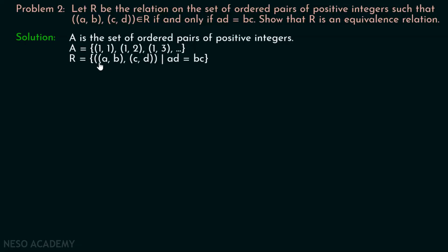The first element of this ordered pair is itself an ordered pair, and the second element is also an ordered pair. We have to show that this relation is an equivalence relation. For this, we have to show that this relation is reflexive, symmetric, and transitive.